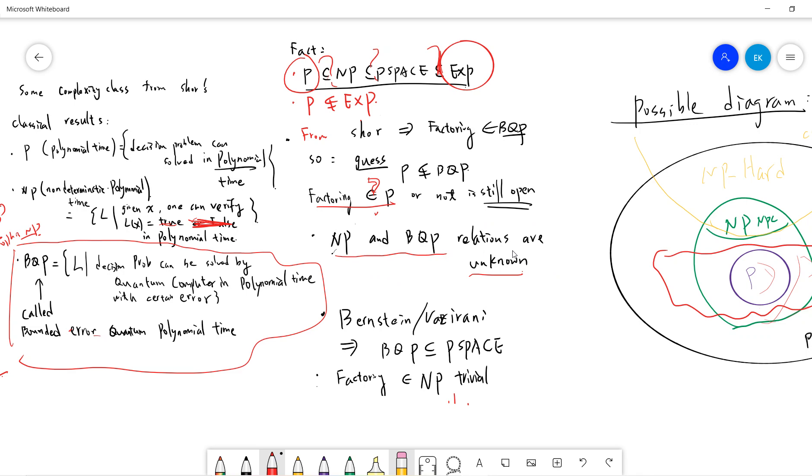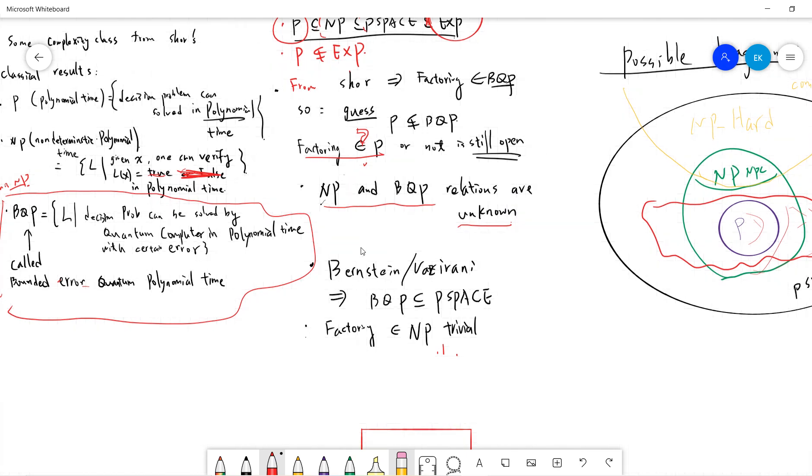Also NP and BQP relations are unknown. So it looks like we haven't seen anything concrete. But there's a famous bound called Aaronson-Vazirani. Basically, BQP can at most be PSPACE. So BQP is less than PSPACE. Also, factoring is in NP.